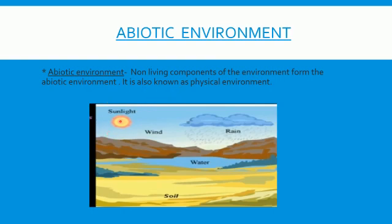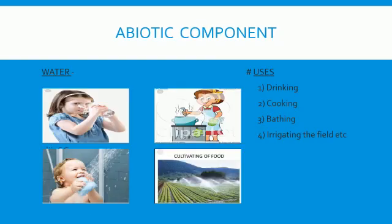The abiotic components include sunlight, wind, rain, water, soil, and temperature. Now we will discuss all the abiotic components one by one. The first is water. Water is very important — it is essential for the survival and growth of all living organisms.